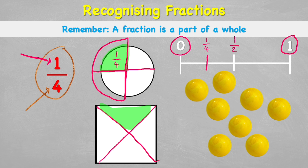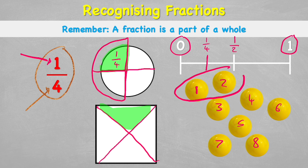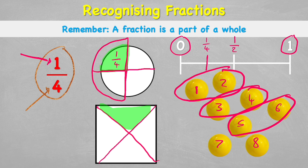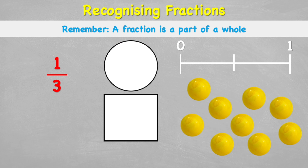To find one quarter of these eight marbles, I need to split them into four equal groups. I can do that by putting two together — one group, two groups, three groups, four groups. So one quarter of eight marbles is two marbles.